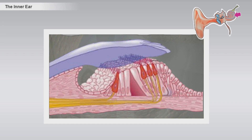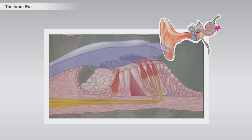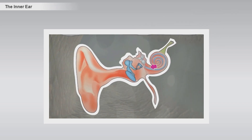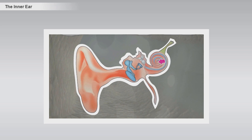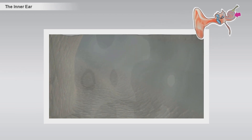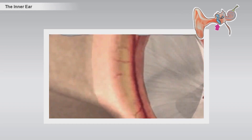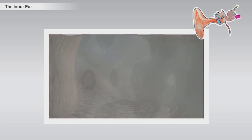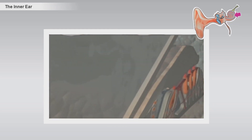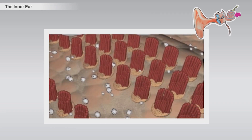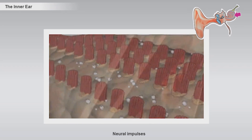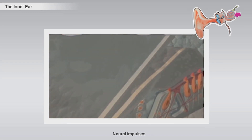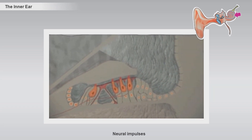Especially the inner hair cells are responsible for transmitting sound to the hearing nerve. The hair cells located in the lower part of the cochlea are mainly stimulated by high frequency or treble sounds, whereas the hair cells in the upper part of the cochlea are stimulated by low frequency or bass sounds. The sound vibrations from the eardrum to the footplate of the stapes attached to the oval window create movements of the fluid in the cochlea. The fluid movements stimulate the hair cells, which generate neural impulses, transmitting sound information to the hearing nerve mainly via the inner hair cells.